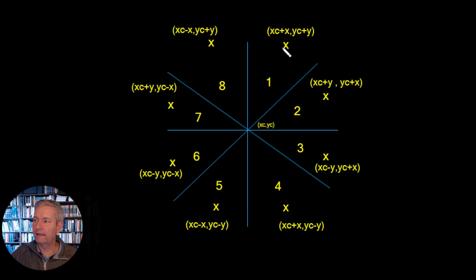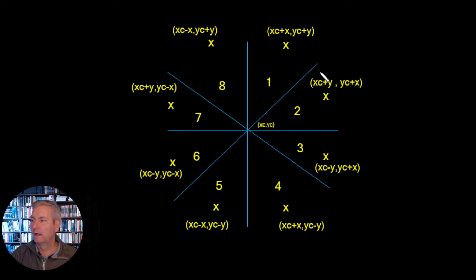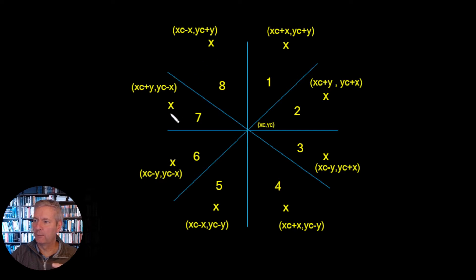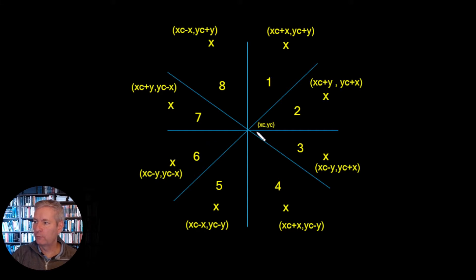To get all the remaining octants, we reflect all the generated points across the boundary lines between octants. For example, reflecting across the y = x line gives us the adjacent octant. We continue reflecting to fill in all eight octants and complete the circle.